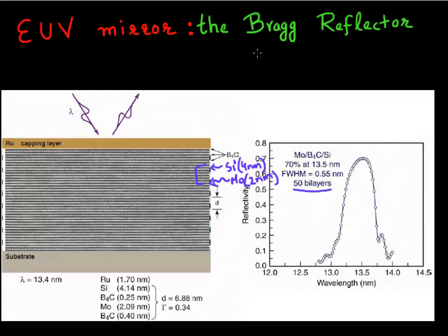And together, they essentially form a Bragg reflector, which has reflectivity centered around the wavelength of 13.5 nanometer. So it has its maximum reflectivity at that particular wavelength.